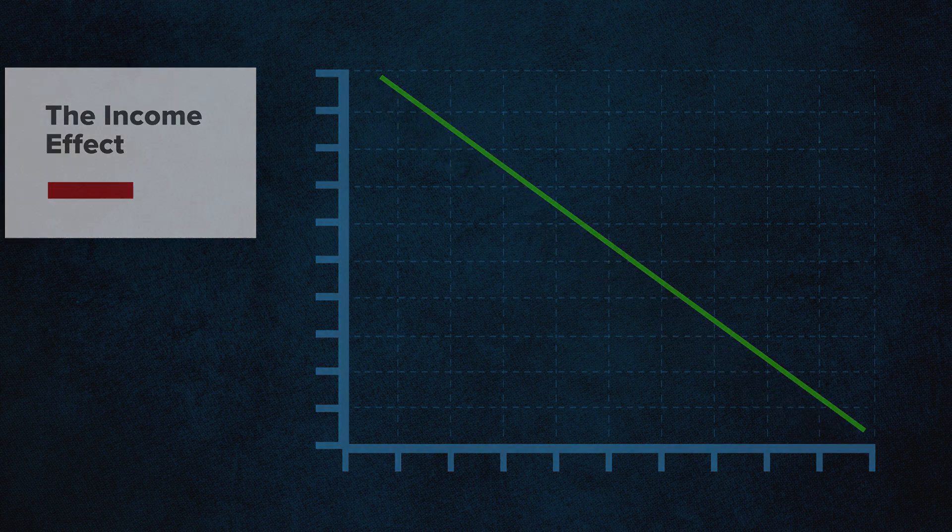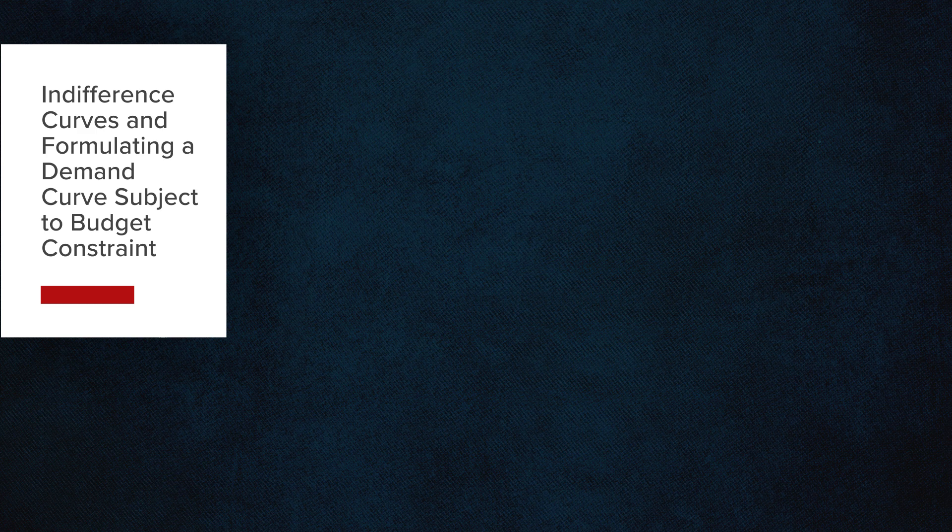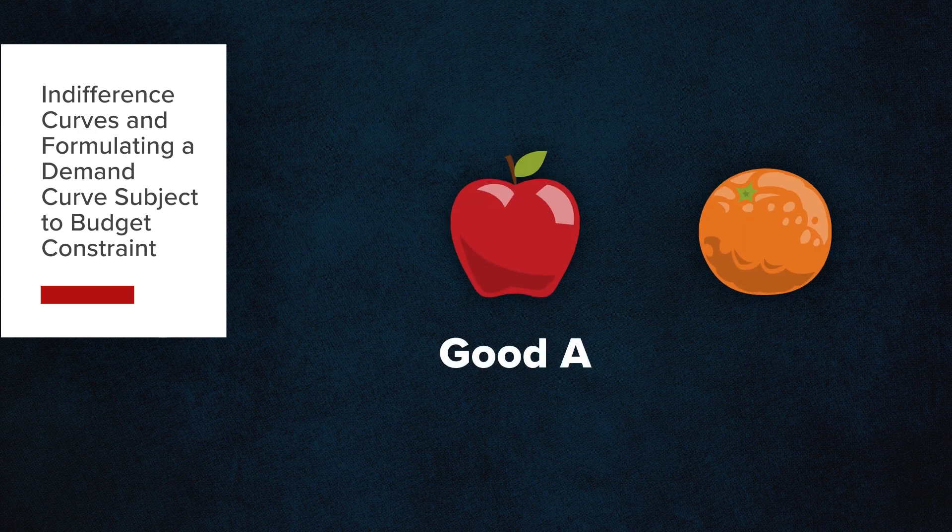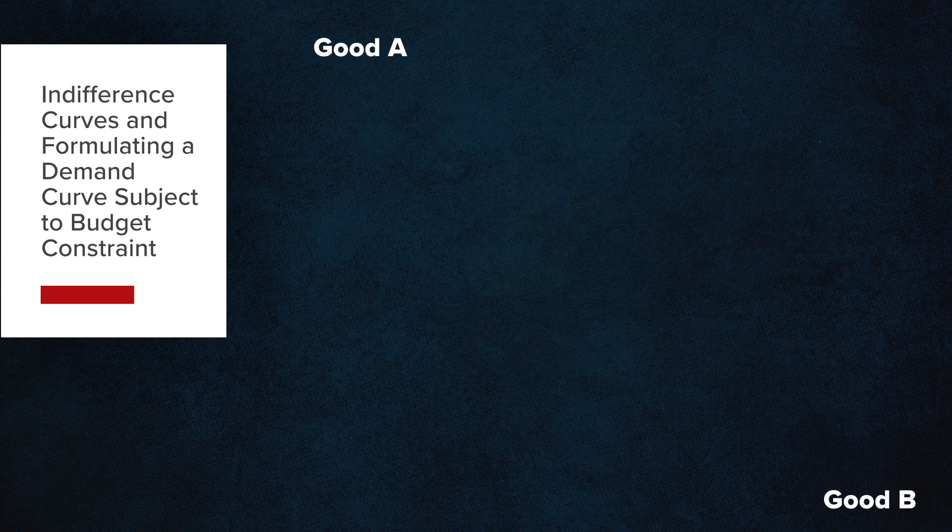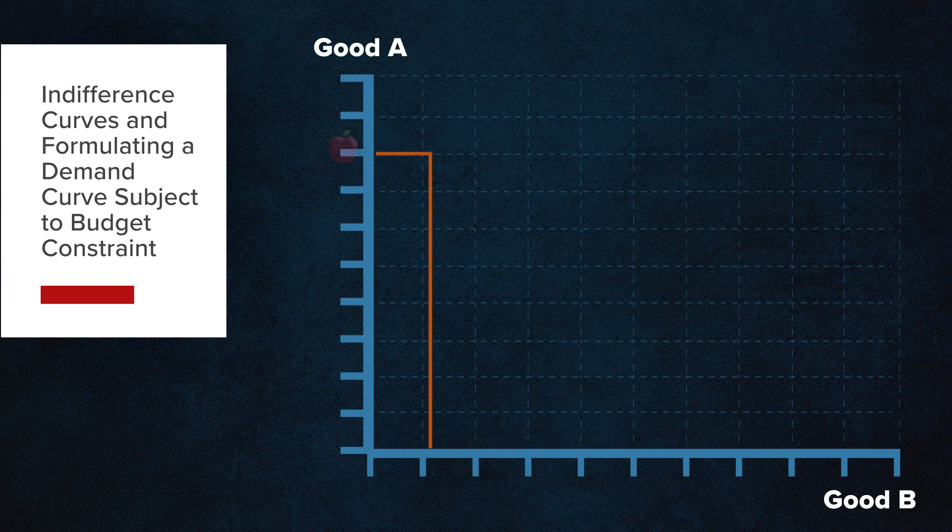Assume that the consumer is faced with a choice of two goods, good A and good B. Further, his consumption is constrained by a monthly income. We can then display graphically each combination of A and B for which the consumer is equally satisfied.